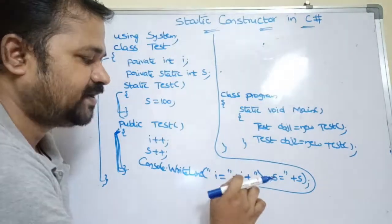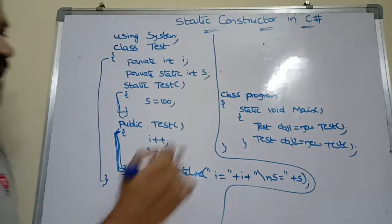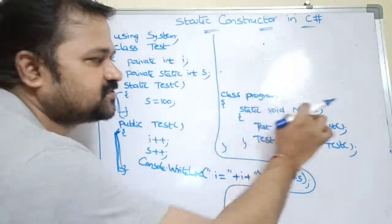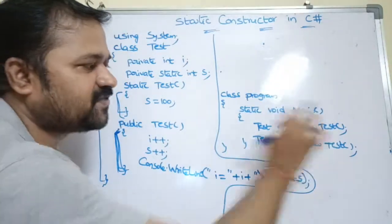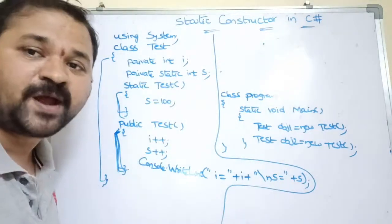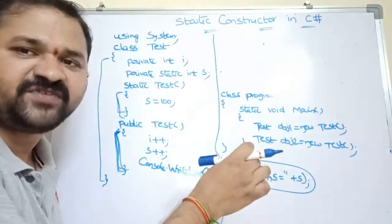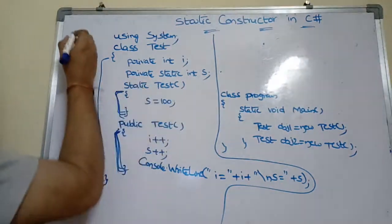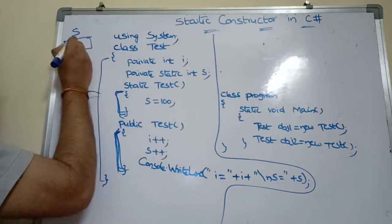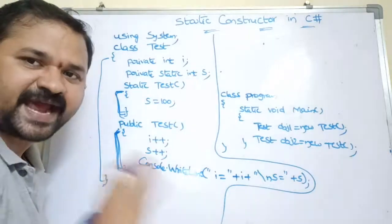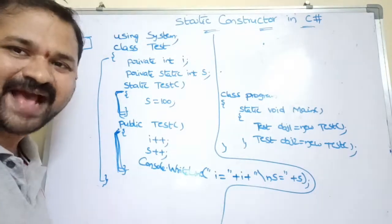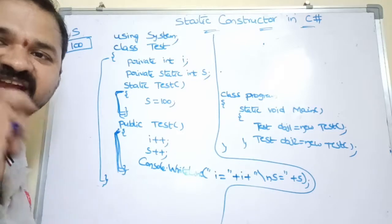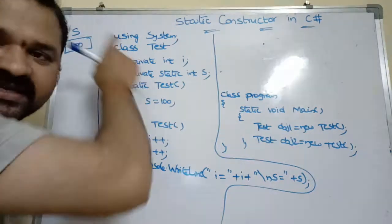Inside the constructor we do 'i++' and 's++', then display the values: 'i = ' + i and 's = ' + s. Execution starts from the main method. In the main method we write 'Test obj1 = new Test()'. But because our program contains a static constructor, that constructor will be called before any object is created. So first the static constructor runs and sets 's' to 100. A static variable means all objects of the class share the same variable, with memory allocated only once.